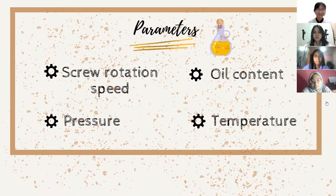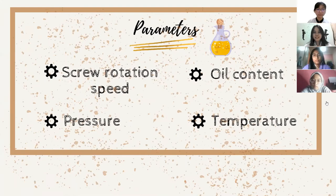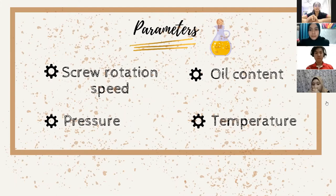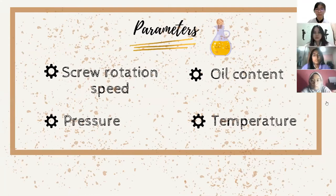The parameters of this experiment are as follows. Screw rotation speed is a crucial parameter as it affects oil yield, passage time, specific energy consumption, and press capacity. Oil content is measured to determine the oil yield from canola seeds. Pressure is a parameter that needs to be continuously monitored as it affects the screw axial distance in the screw press. Temperature is also monitored carefully as it should not exceed maximal allowable values to avoid any damage to the oil seeds.